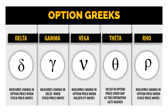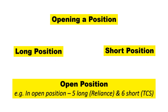In the options market, several factors affect the price of an option contract. Price sensitivity is important, and traders use option Greeks to manage profit and risk efficiently. These Greeks are delta, gamma, theta, vega, and rho. The value of an option decreases as expiry approaches due to time decay. Entering a contract is called opening a position. Buying is a long position, and selling is a short position.